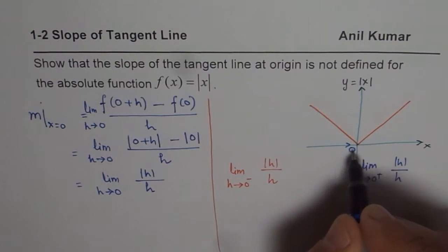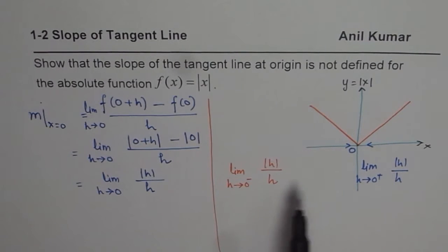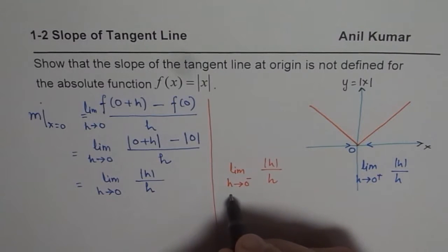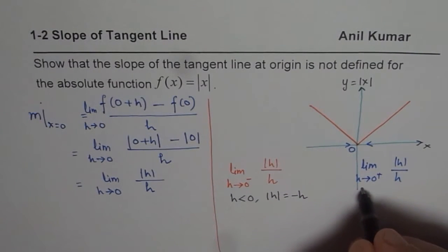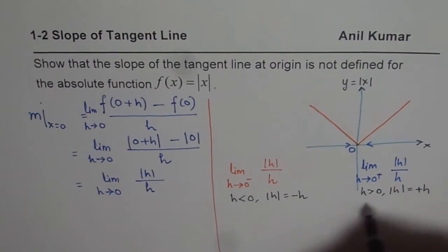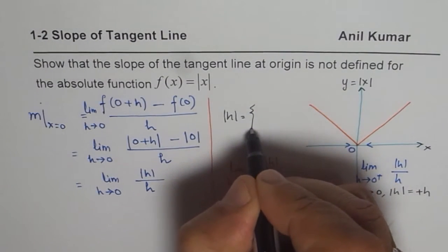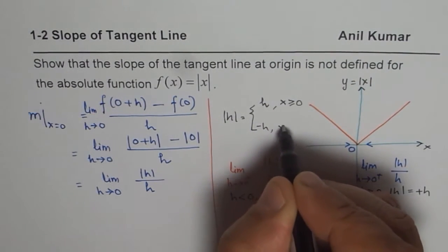We are approaching 0 from both sides. If these two limits are exactly the same, then the limit exists; otherwise, the limit does not exist. Now, when h < 0, then |h| = −h. And when h > 0, then |h| = +h. That is how the absolute function is defined. So we can redefine it: |h| = h when h ≥ 0, and |h| = −h when h < 0.